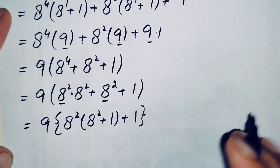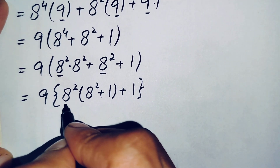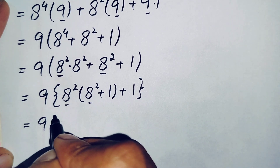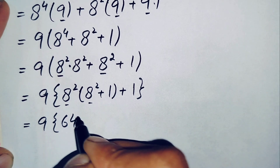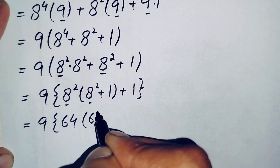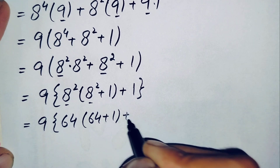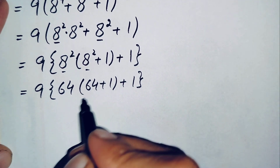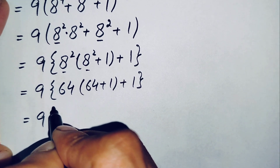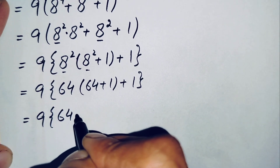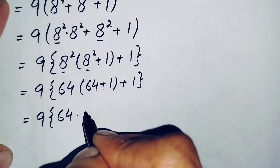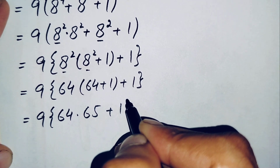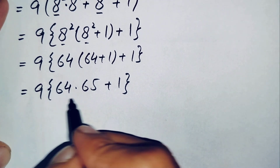Now we substitute the value of x squared. Since x equals 8, x squared is 8 times 8 which is 64. Replacing x squared with 64 in both places gives: 9 times (64 times (64+1) + 1). Adding inside: 9 times (64 times 65 + 1).